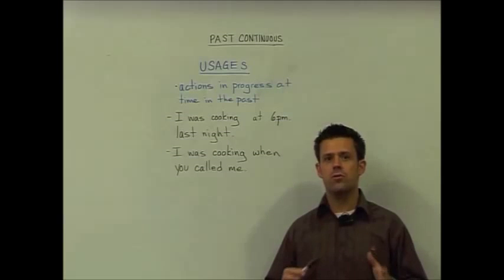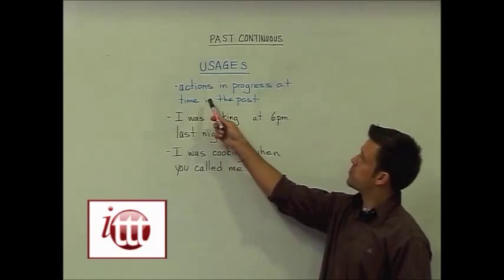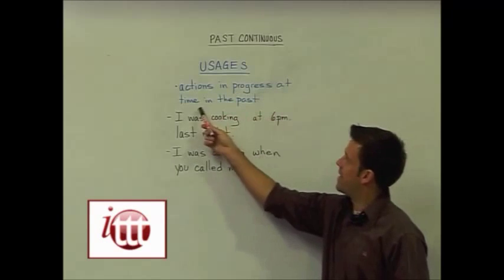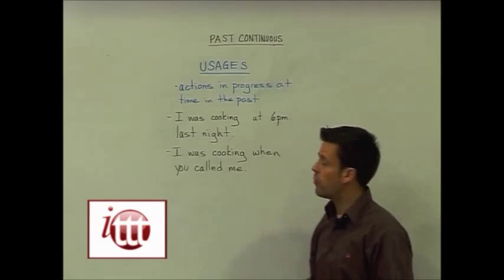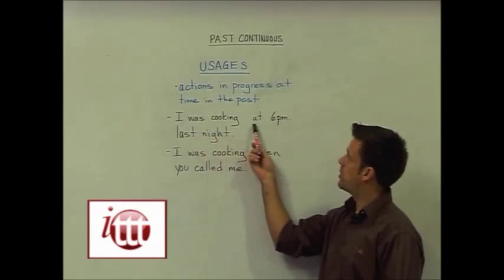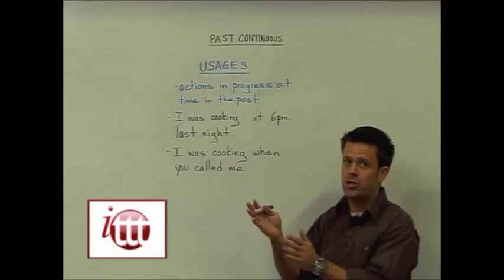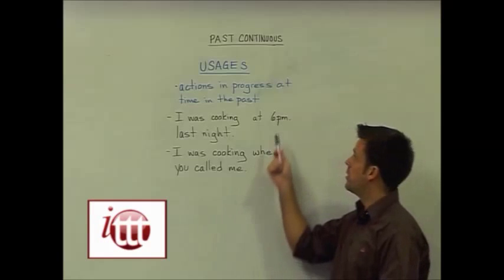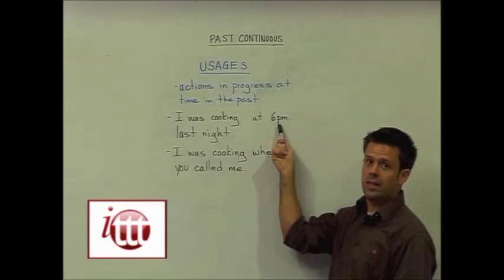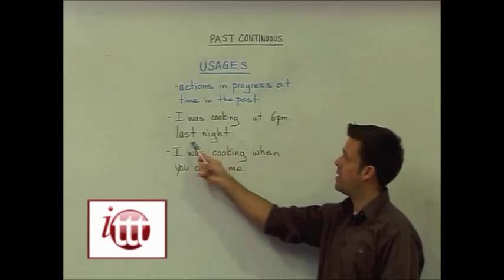The usage for the past continuous tense is expressing actions in progress at a time in the past. So one example could be I was cooking at 6pm last night. I was cooking, there was an action that began, occurred, and finished at a particular point in time in the past, 6pm last night.